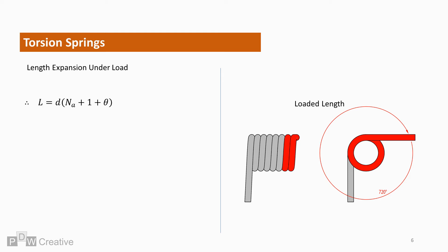The length calculation therefore becomes L equals D times Na plus 1 plus the number of additional rotations, where theta is the number of additional rotations.